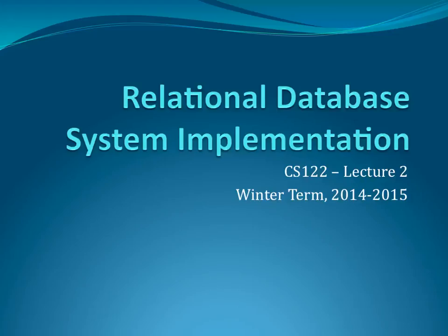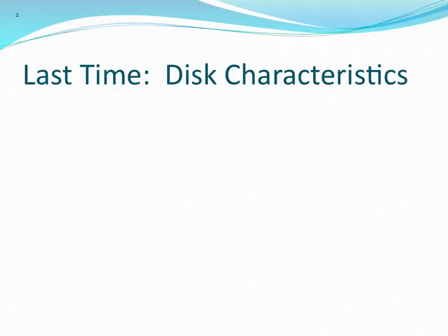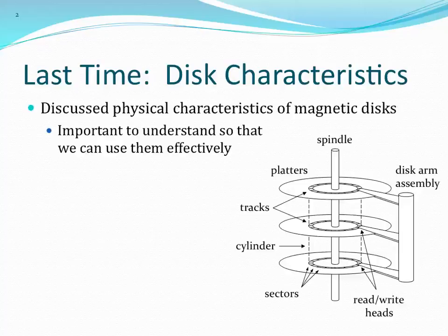So if there's nothing else to discuss, we'll go ahead and start. We were talking about storage devices, and we're spending a particular amount of time talking about the spinning rust buckets that we still use to store data — spinning magnetic disks — because most of database implementation centers around how to use these devices in a way that's as efficient as possible.